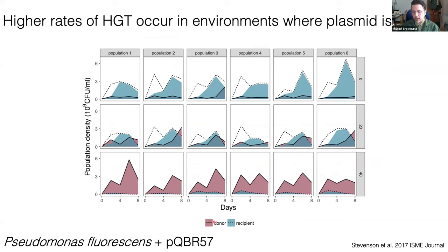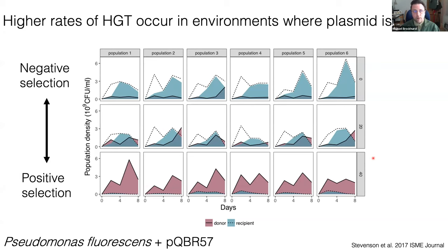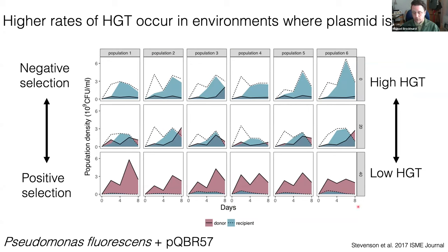Looking in more detail at the plasmid-containing populations across six replicates and three mercury levels: in the absence of mercury, the plasmid essentially spreads completely through horizontal transmission — the plasmid bearers at the end are basically all transconjugants. When we select with mercury we see global expansion of the original plasmid donor. As you move from negative to positive selection, you move from a high horizontal gene transfer regime into a low HGT regime where the plasmid spreads via vertical transmission.